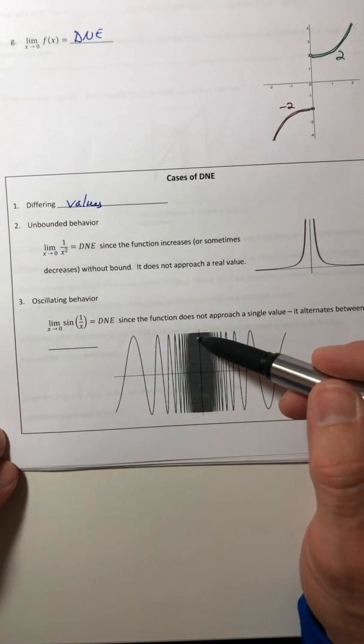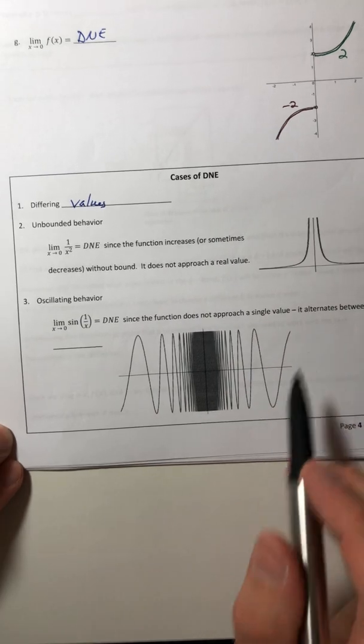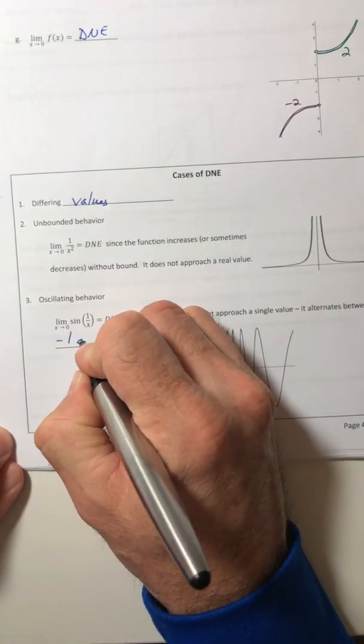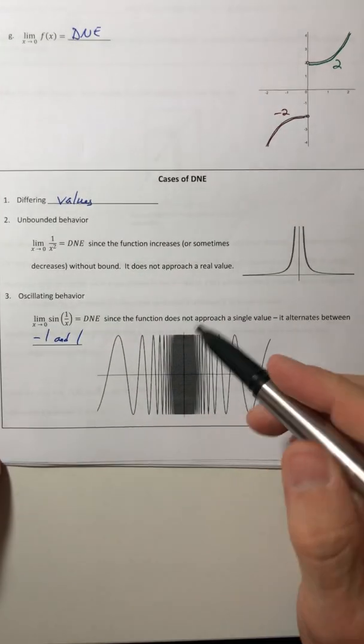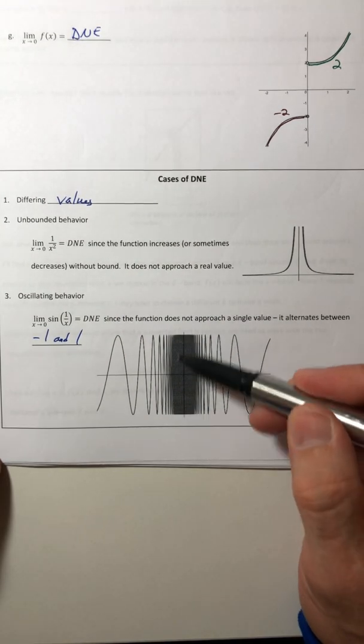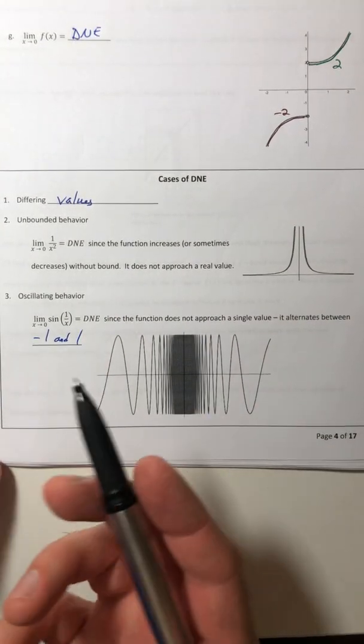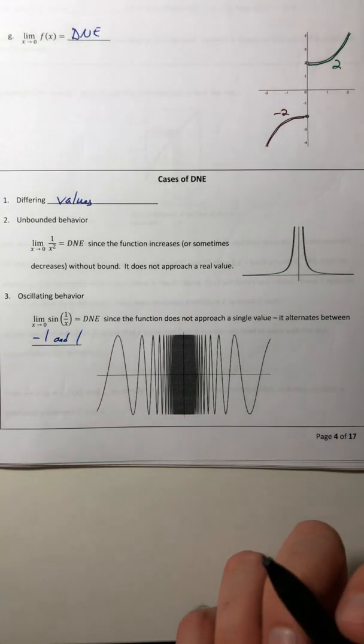But the Y values themselves are alternating between negative one and one. It can't really decide what it's approaching. It's approaching like two different things. Well, limits can't do that. They have to approach a single value.